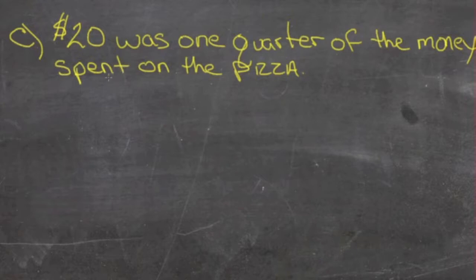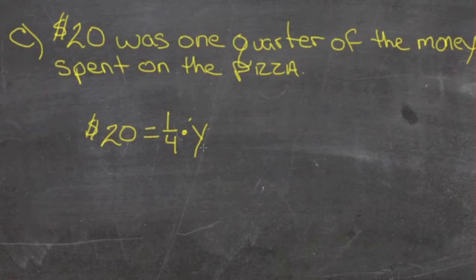In example C, twenty dollars was one quarter of the money spent on the pizza. Twenty dollars represents one quarter of some amount we don't know. If the amount we don't know is, say, y - so y is our variable - twenty dollars was one quarter of that. So twenty dollars is equal to one quarter of our unknown amount of money.